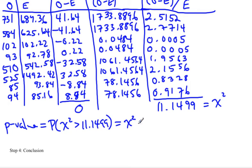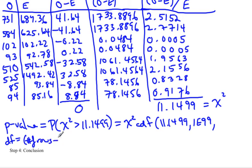So you'd go into your distr menu and get the chi-squared CDF. Your starting is 11.1499, and you are shading everything to the right, so that would be 1E99. And then the last thing we need to know is the degrees of freedom. So the degrees of freedom in a chi-squared test is always equal to the number of rows minus 1 times the number of columns minus 1.